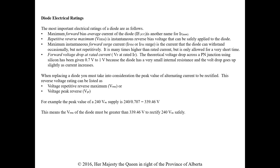Electrical ratings — the most important ratings of a diode are: maximum forward bias average current (IFmax), which we don't want to exceed; the repetitive reverse maximum (VRM), the safe voltage it can withstand while reverse biased; maximum instantaneous forward surge current, which the diode can withstand occasionally but not repetitively; and forward volt drop at rated current. The theoretical volt drop across a PN junction for silicon is 0.7 to 1 volt, because the diode has a small internal resistance and the volt drop rises slightly as current increases — that's why we use 1 volt instead of 0.7 for wattage calculations.